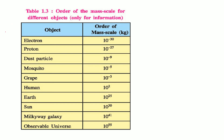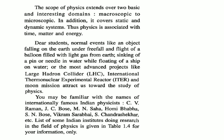This is the mass scale. The electron has mass 10⁻³⁰ kg — you can't even imagine how small that is. Then comes proton, dust particle, mosquito, grape, human, earth, sun, Milky Way galaxy, and the observable universe at 10⁵⁵ kg. The scope of physics extends to two basic domains: macroscopic (very, very large) and microscopic (very, very small). Along with this, if something is static or dynamic, our scope of physics covers both static and dynamic systems.